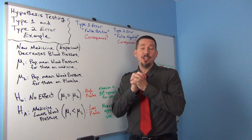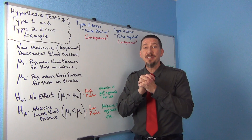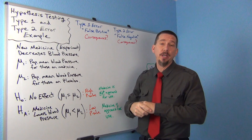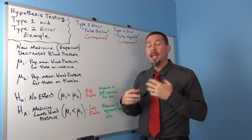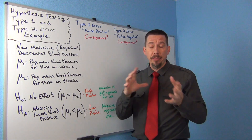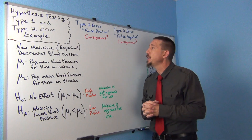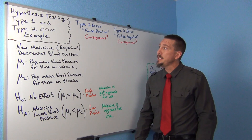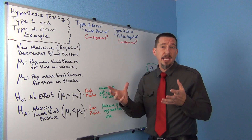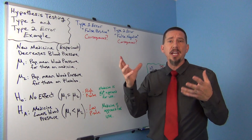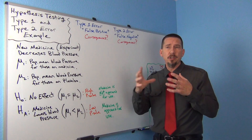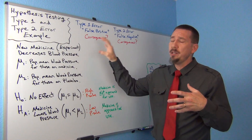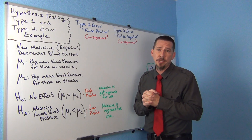Hi everyone, this is Matt Tuchel with Intro Stats and today we're continuing our discussion about type 1 and type 2 errors. In our last video we went over the theory behind type 1 and type 2 errors, gave some basic definitions and ideas. Today I wanted to look at an example to give you an idea of what a person in statistics or data science has to think about when dealing with this situation.